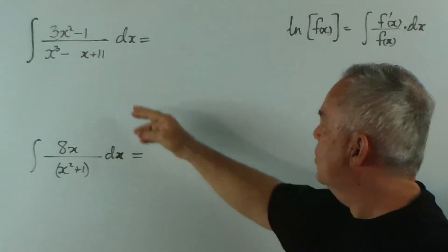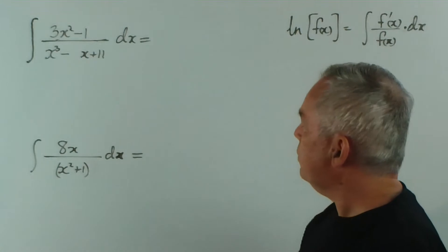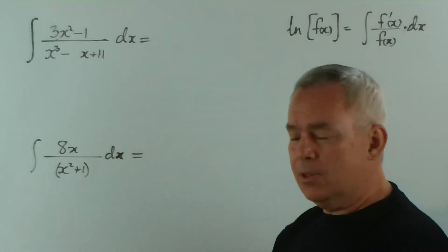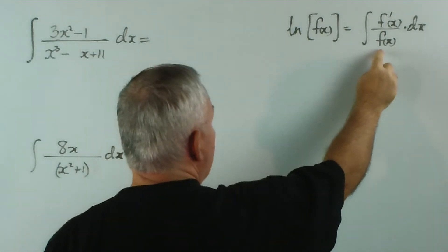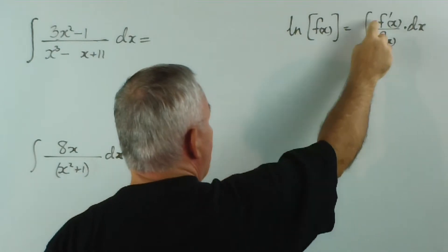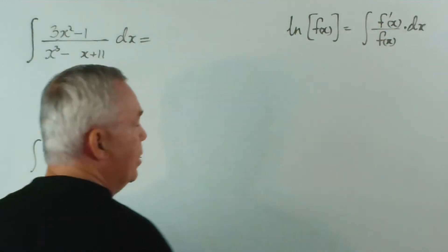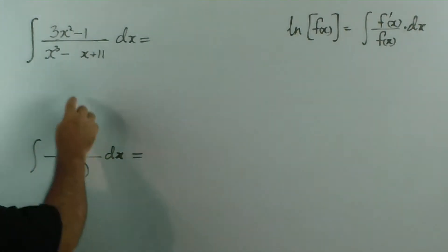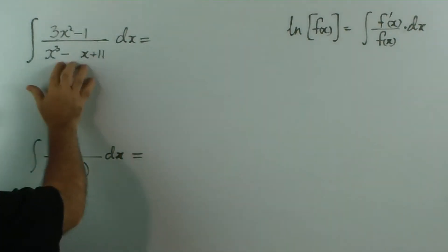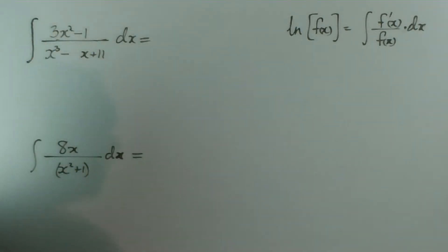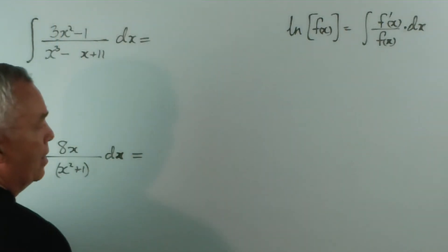Here we have the two expressions that we're going to integrate. And I want you to notice, following this pattern, we have a function on the bottom and another function on the top that happens to be the derivative of it. Here we have a function on the bottom, and the derivative of this is 3x² - 1. And in this case, that's exactly what we have on the top. So this is beautifully set up to follow that pattern.